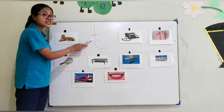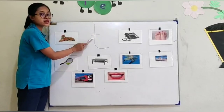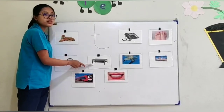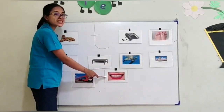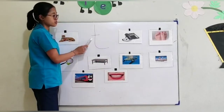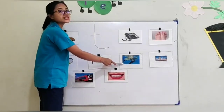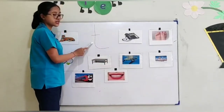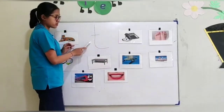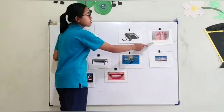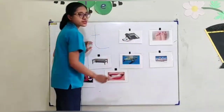How about this one? T for train. T for table — good! T for teeth. T for turtle — good! Next, T for telephone. T for toes. And the last one, T is for television.